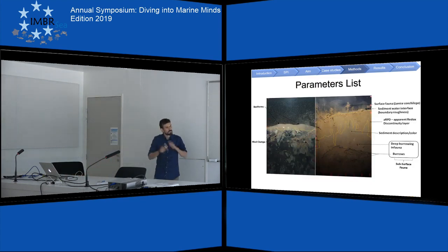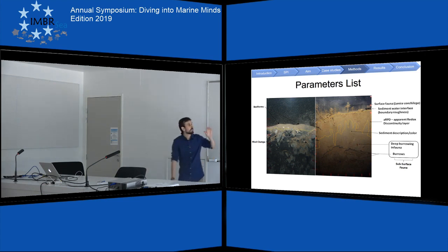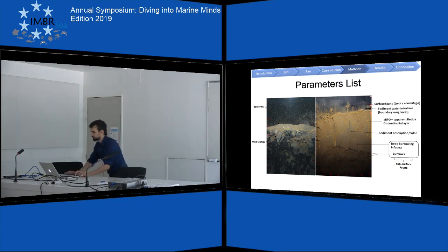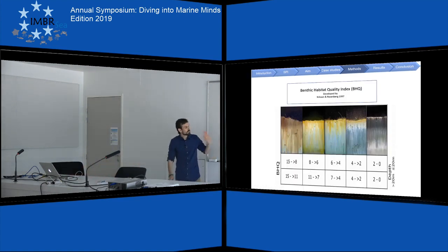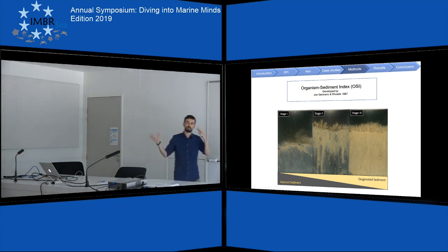With these pictures, the parameters we can assess are bed forms, mud clumps, subsurface fauna, sediment description — for example, if it's fine or medium — the RPD redox layer and how deep we can find it, the sediment-water interface and how deep the prism goes, and surface fauna. For indices, we have benthic habitat quality, BHQ, which attributes a score from 0 to 15 where 15 is good environmental status. We also have the organism sediment index, OZ. These two are correlated with each other.